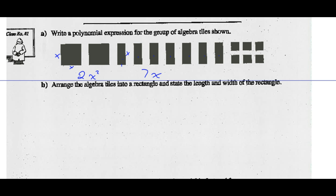I've got 7 X-tiles, and I've got 1 by 1, so I've got 6. So this is 2X squared plus 7X plus 6. If you can arrange these algebra tiles into a rectangle and state the length and width of that rectangle, then you have factored this expression.